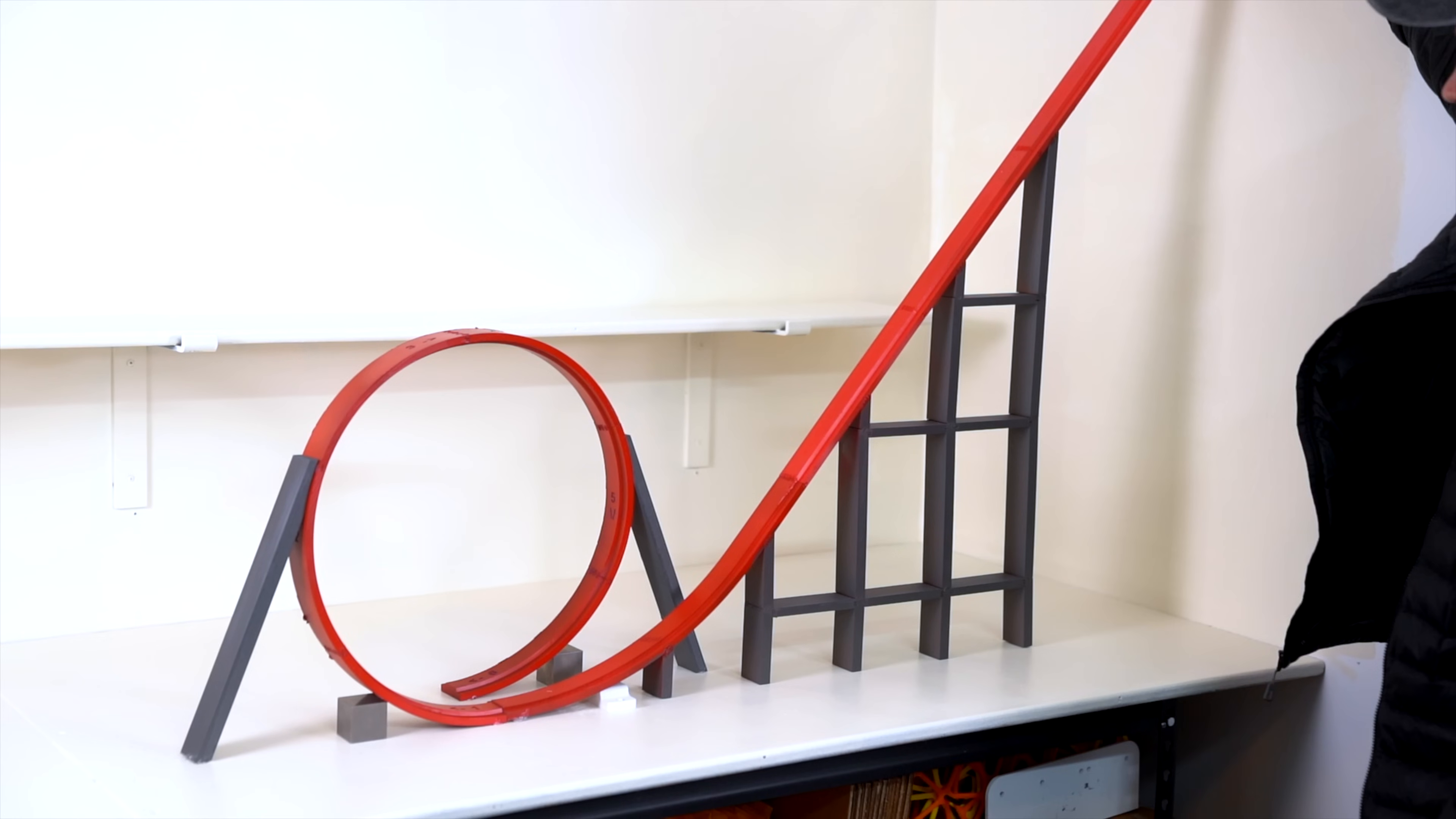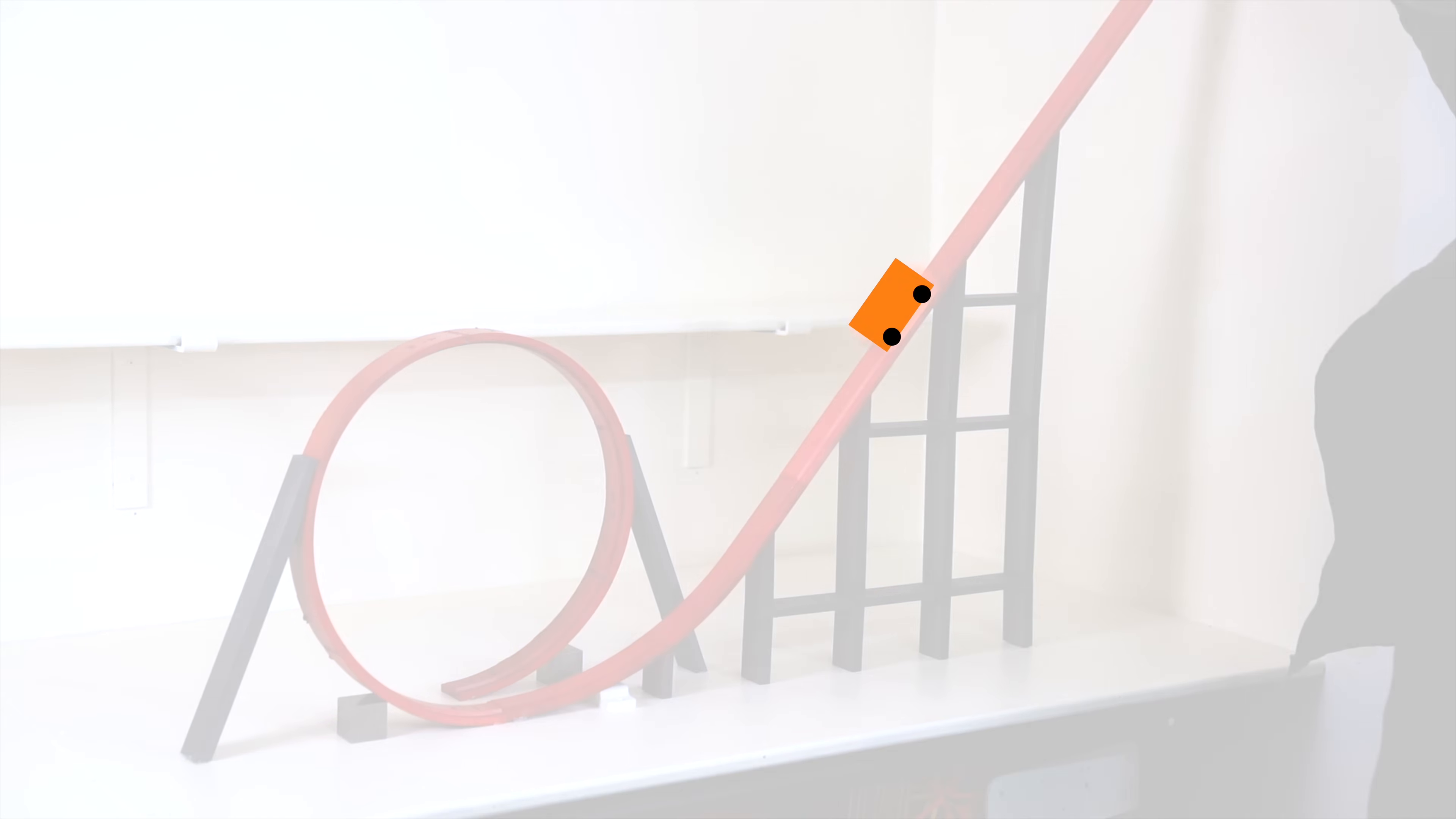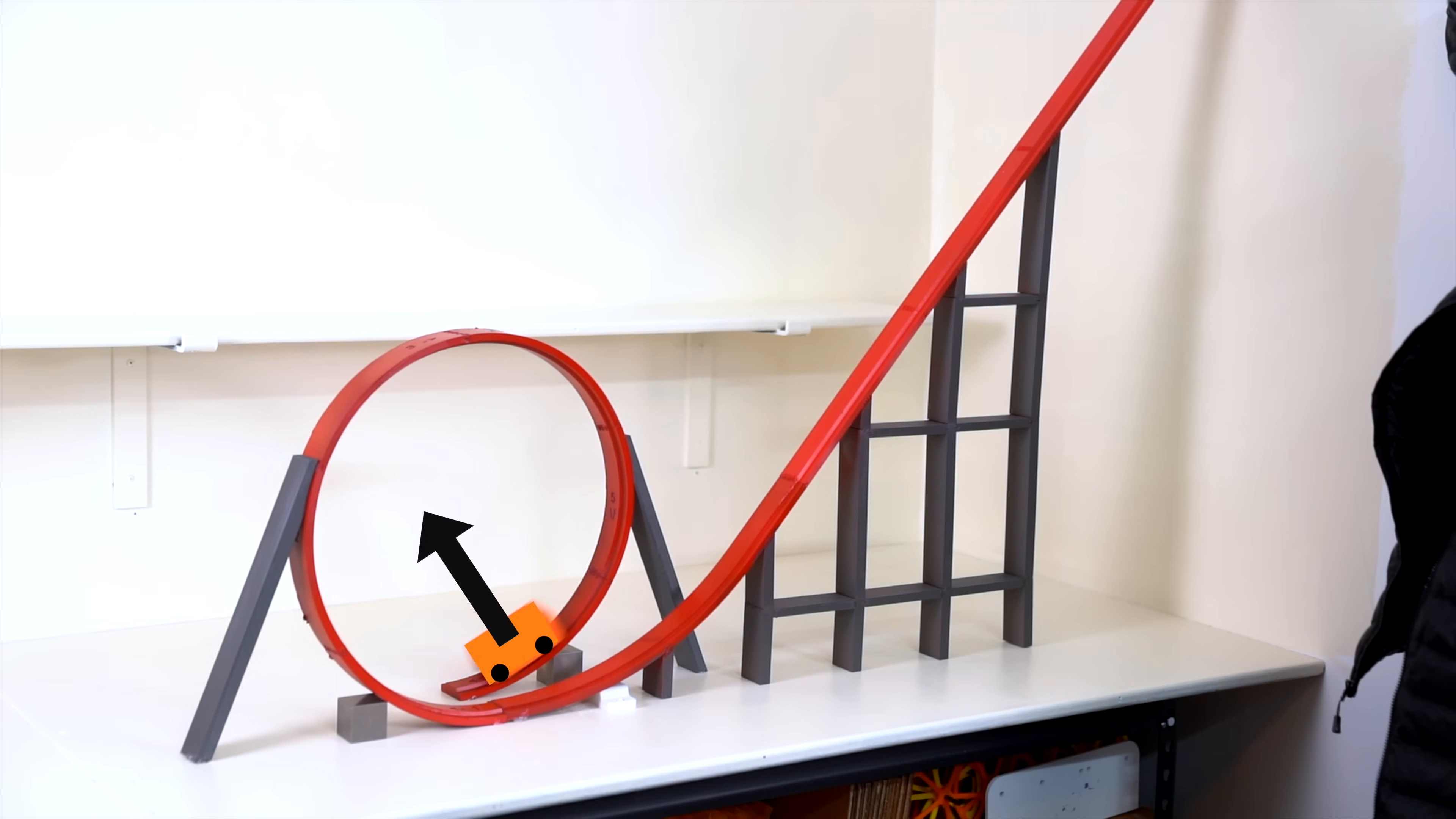This isn't super intuitive at first but imagine the car as its own unit in the system. In order for the car to change direction we have to apply a force. You can notice a big difference between the amount of force at the top of the loop versus the bottom of the loop.